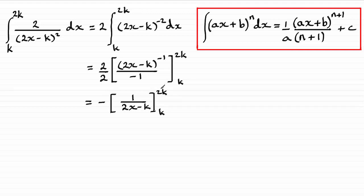So it's just a question now, substituting the 2k in and subtracting what we get when we put the k in. So I'll have the negative here outside. And then what we're going to have is 1 over, and we're going to put that 2k in. So we get 2 lots of 2k. That's 4k minus the k. That gives us 1 over 3k. And we subtract what we get when we put k in. So that's 1 over 2k minus k. So that's 1 over k.